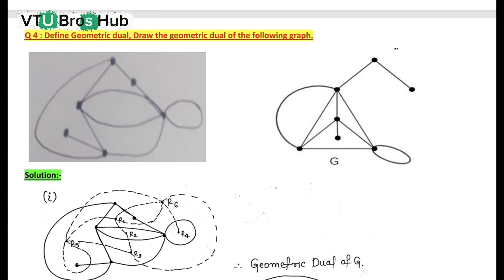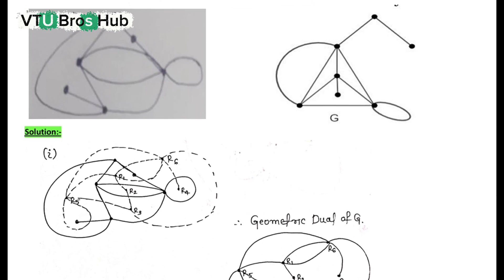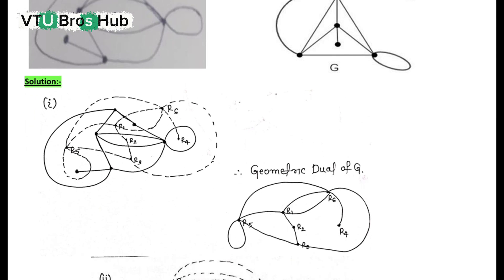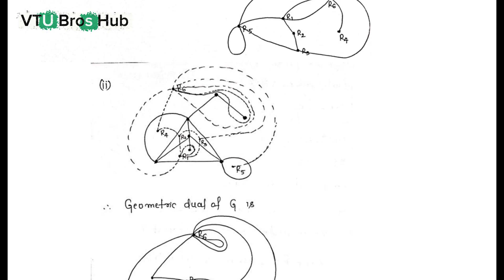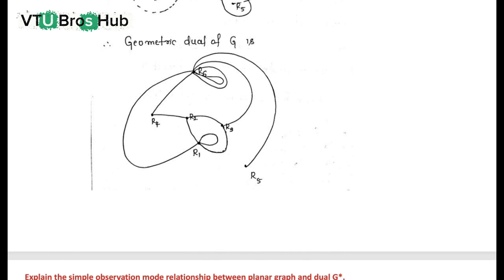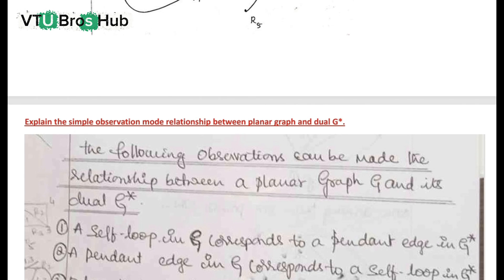Question 4: Geometric dual of a graph. A geometric dual is made by placing a vertex in each face of a planar graph. You connect vertices if their faces share an edge. Now refer to the shown graph and its geometric dual to understand the concept clearly.